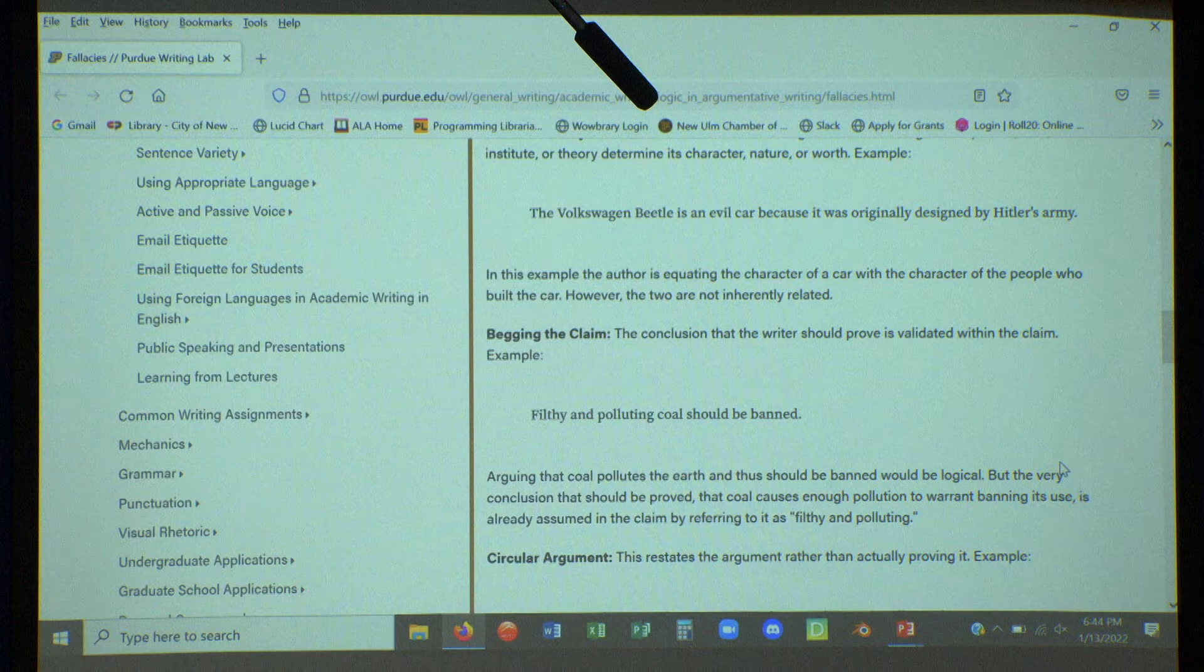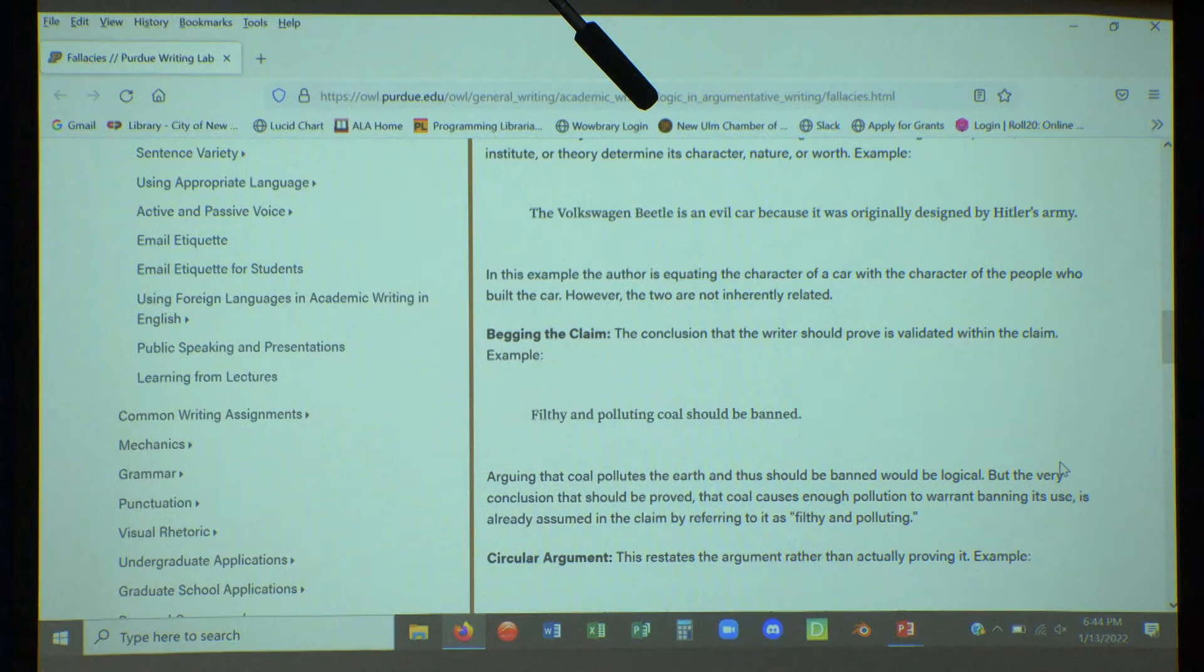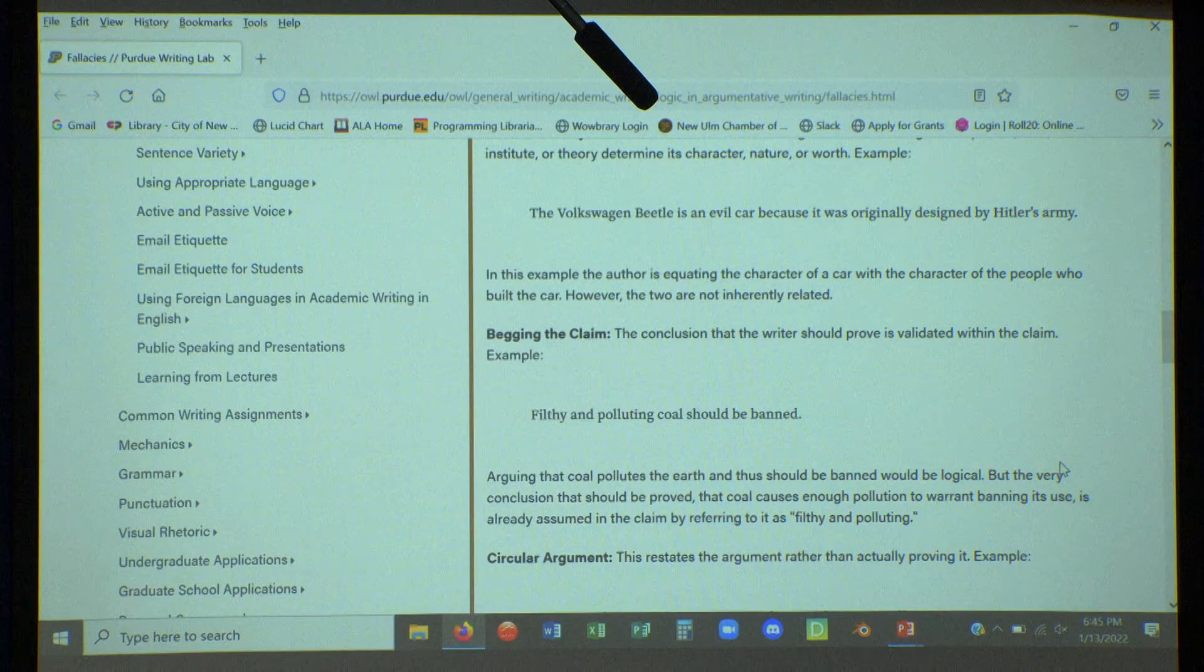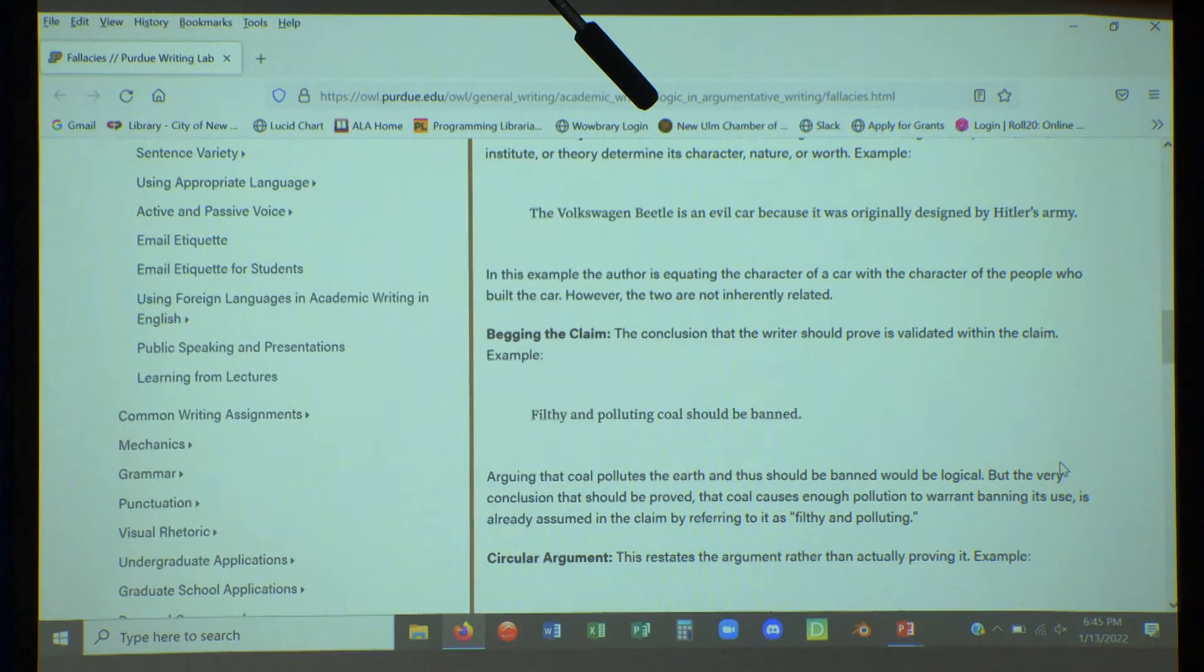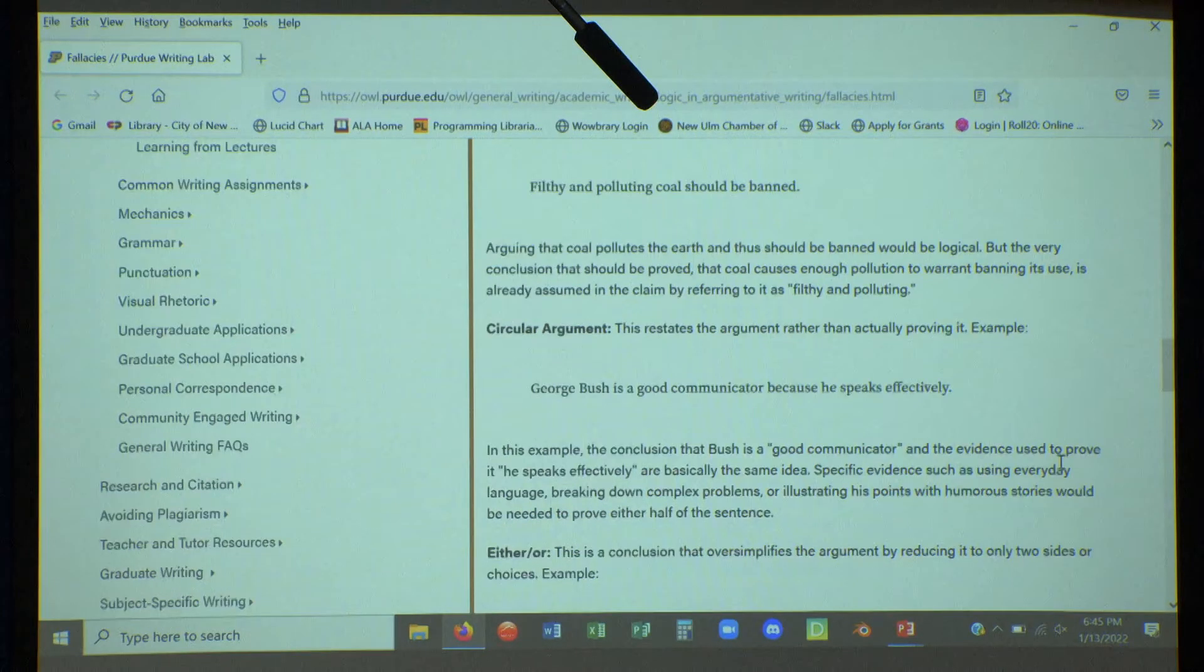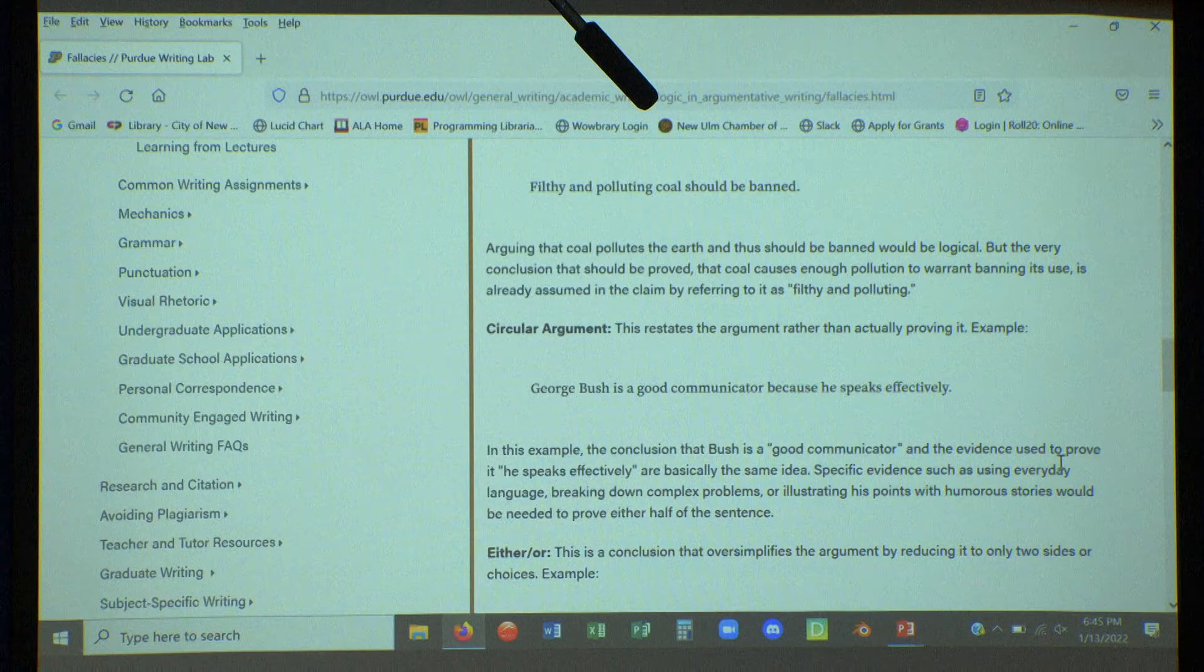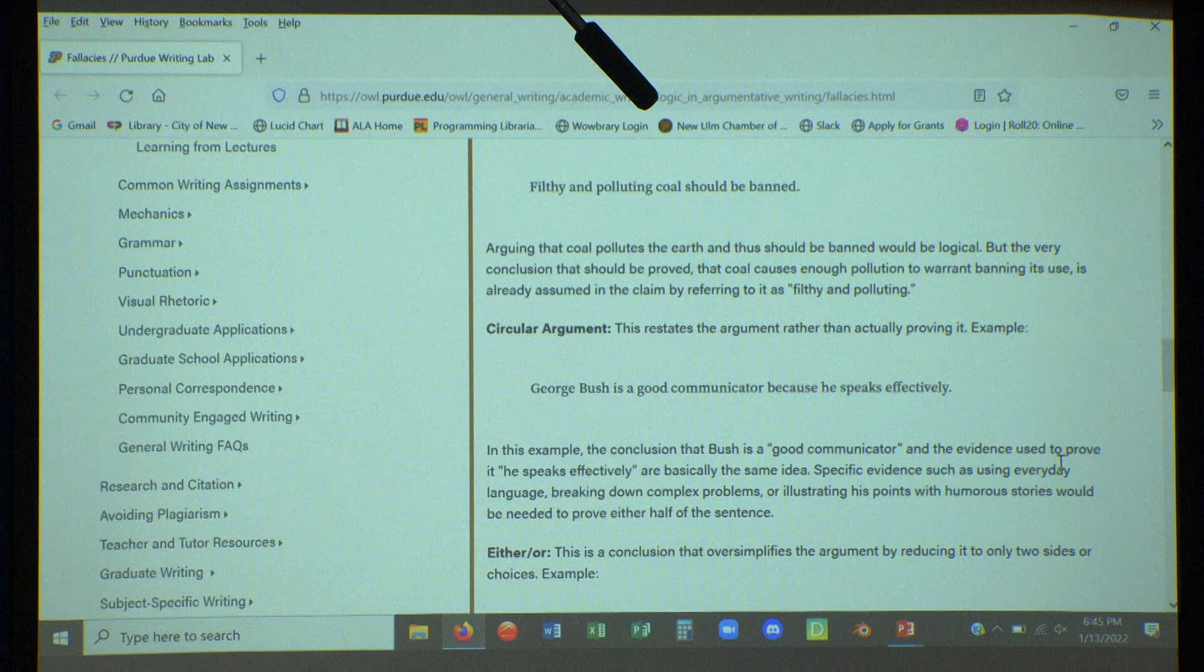Begging the claim. You take an idea that you want to prove and you put an assumption that it is proved into you trying to prove the idea. This uses very emotional, descriptive language. You see filthy and polluting coal should be banned. You know the speaker's opinion right away. Should coal be banned? Possibly. But not because they said it this way. Give me actual good reasons why it should be banned and how are you going to go about that ban.